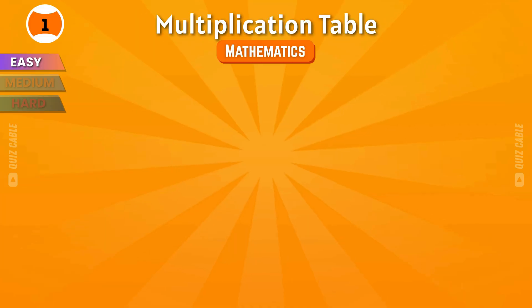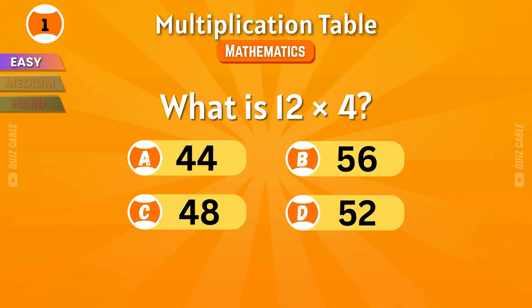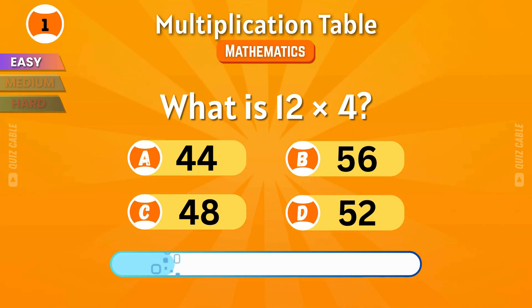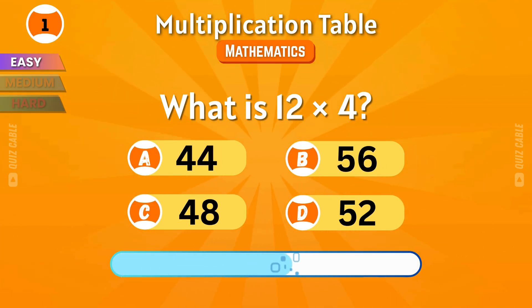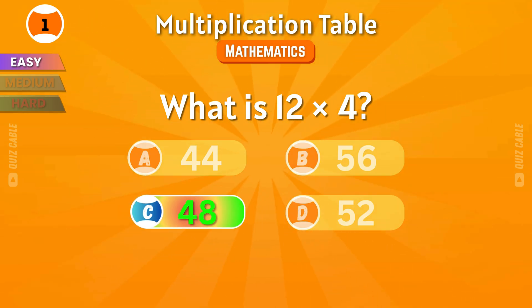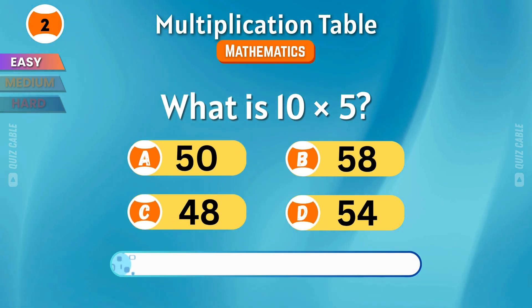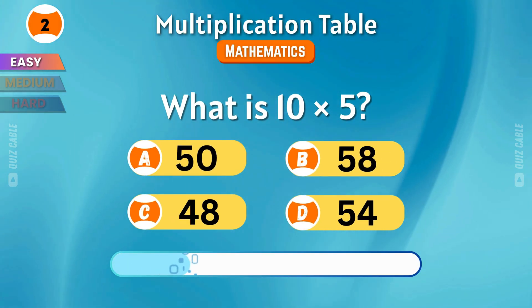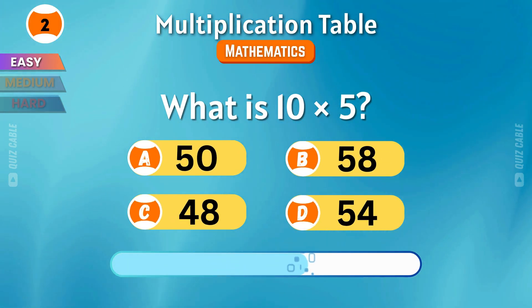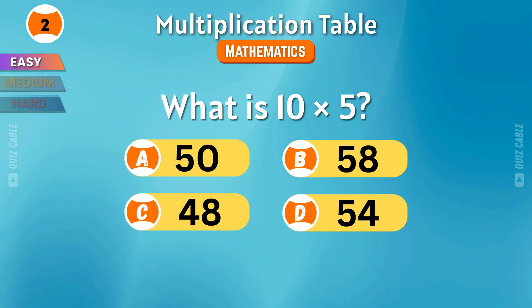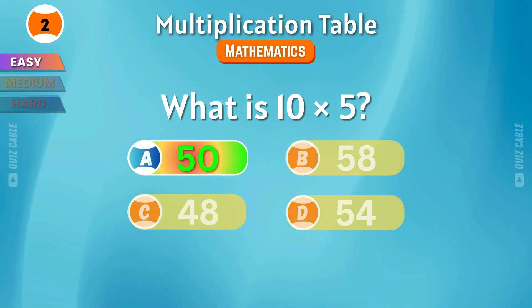Easy level! First question: What is 12 times 4? That makes 48! What is 10 times 5? You got it — 50!